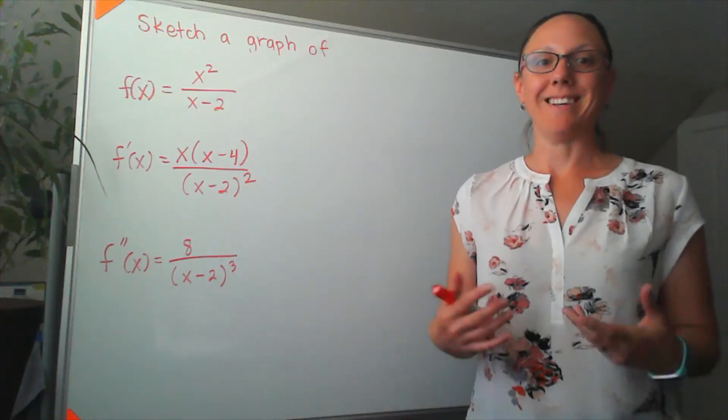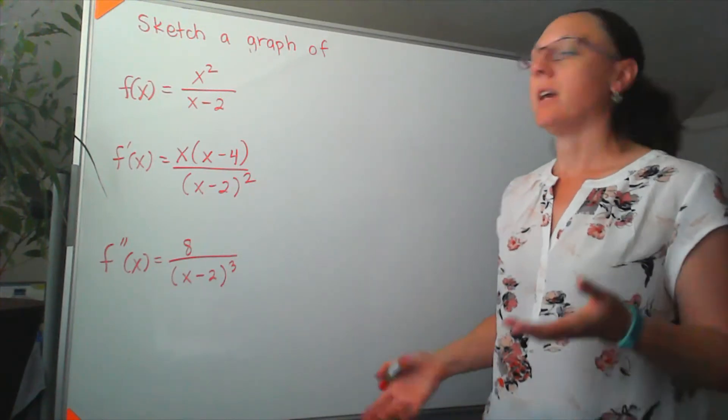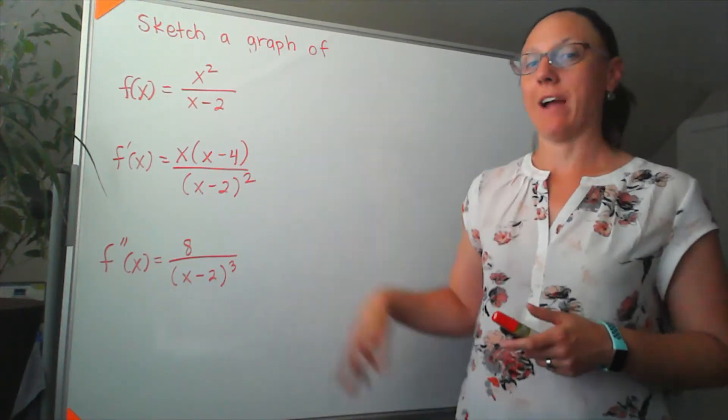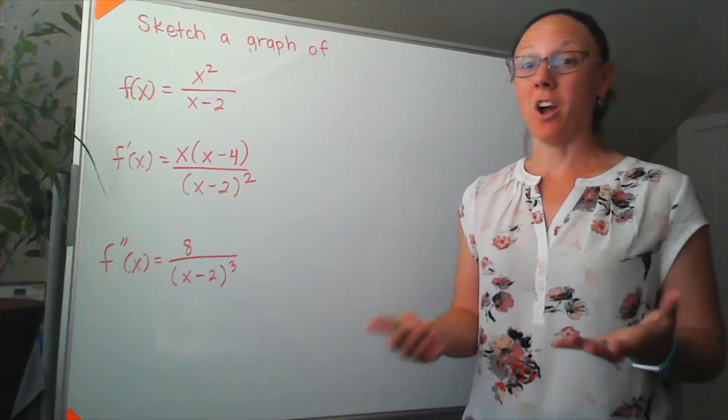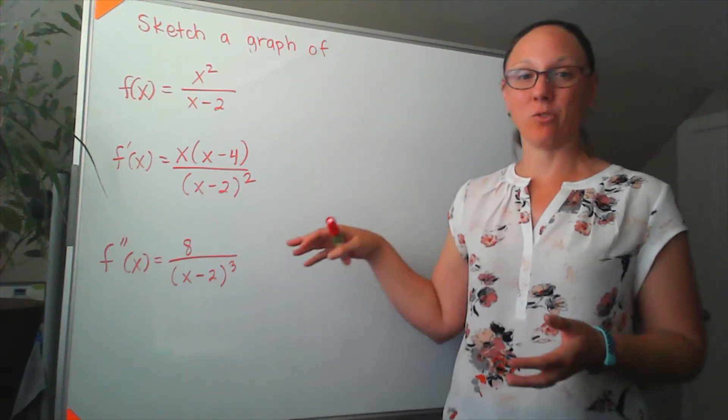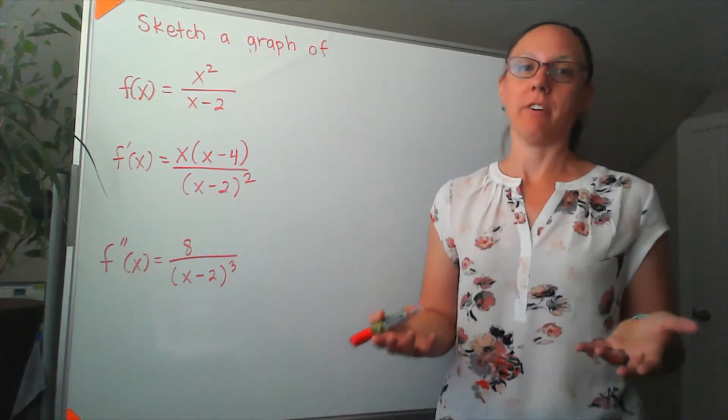I want to do an example of a detailed graphing problem, in particular one where I have a rational function. I've gone ahead and taken both the first derivative and second derivative just to speed things up for us a little bit.